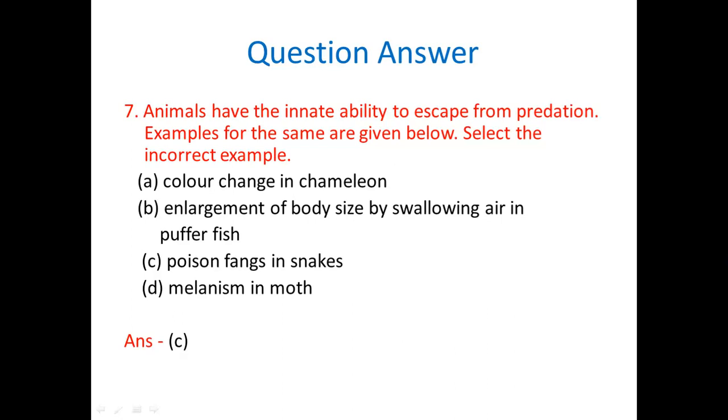Which animals have innate ability to escape from predation? Examples for the same are given below. Select the incorrect example. Color change in chameleon. Enlargement of body size by swallowing air in puffer fish. Poison fangs in snakes. Mimicry in moths. So correct option is C, poison fangs in snakes.